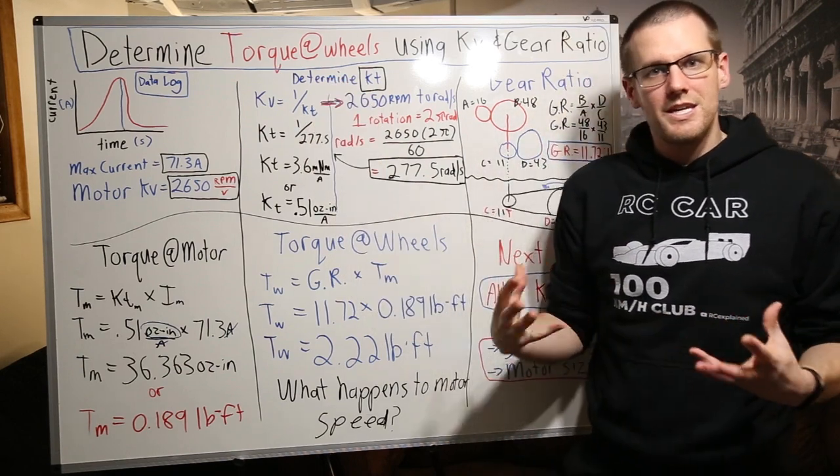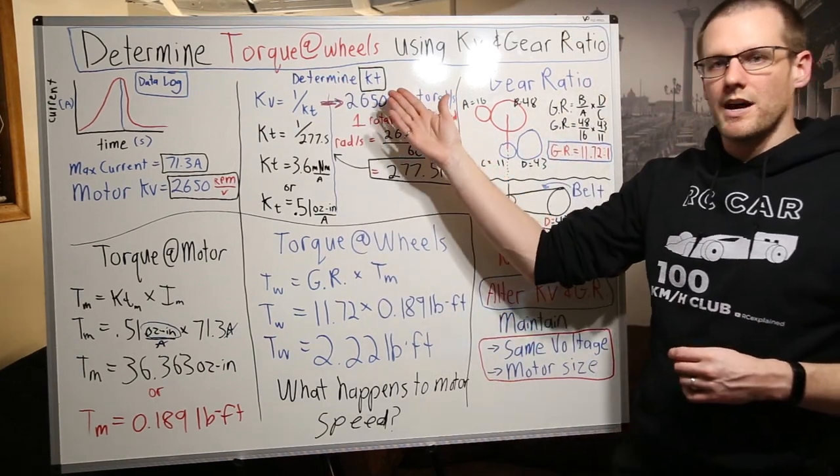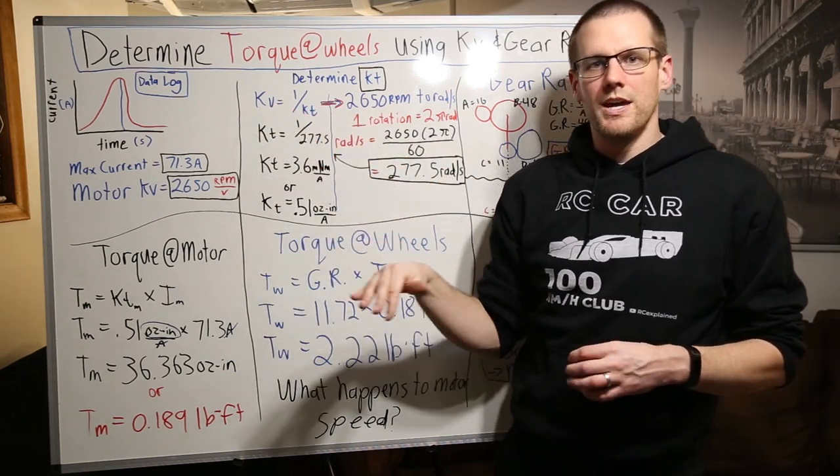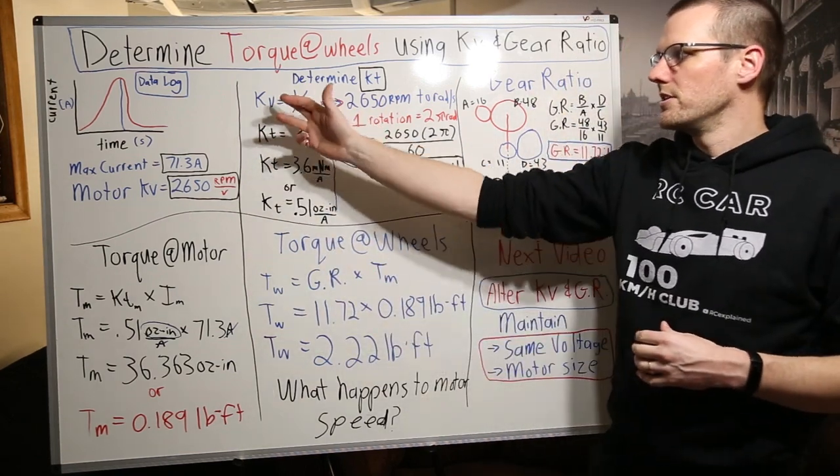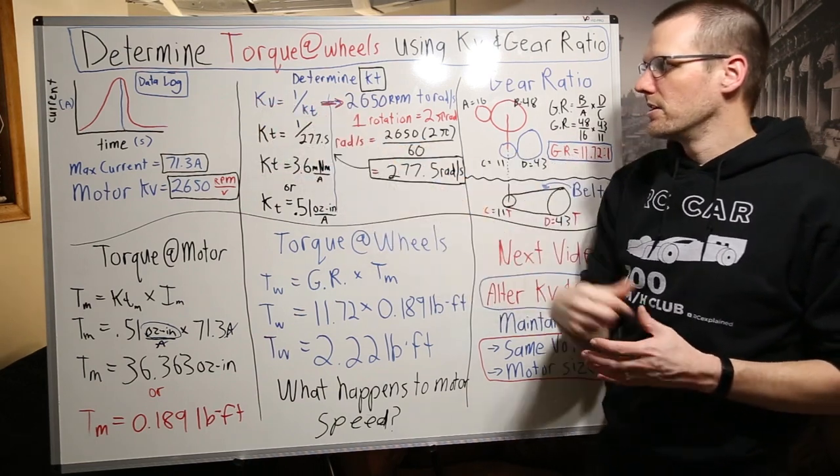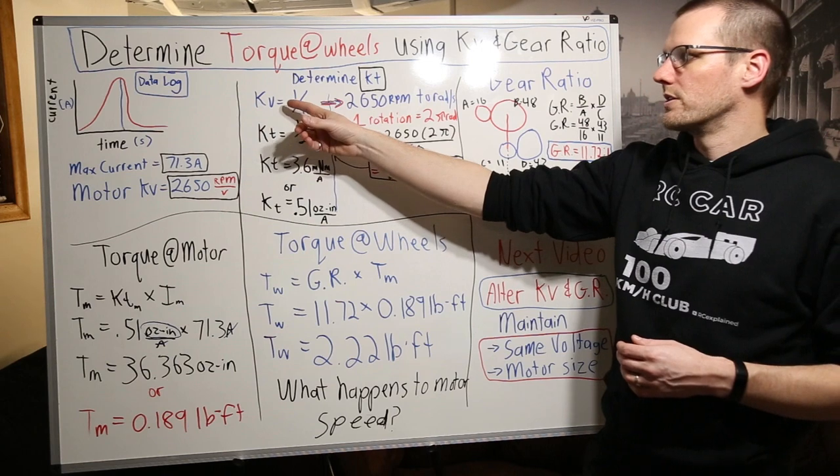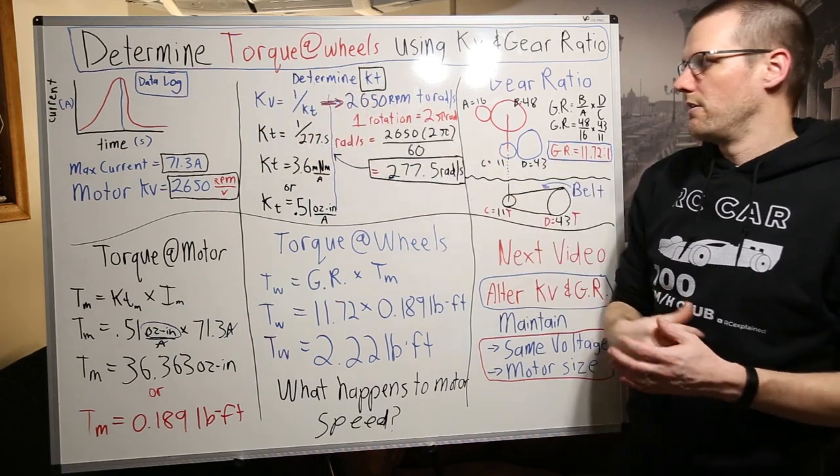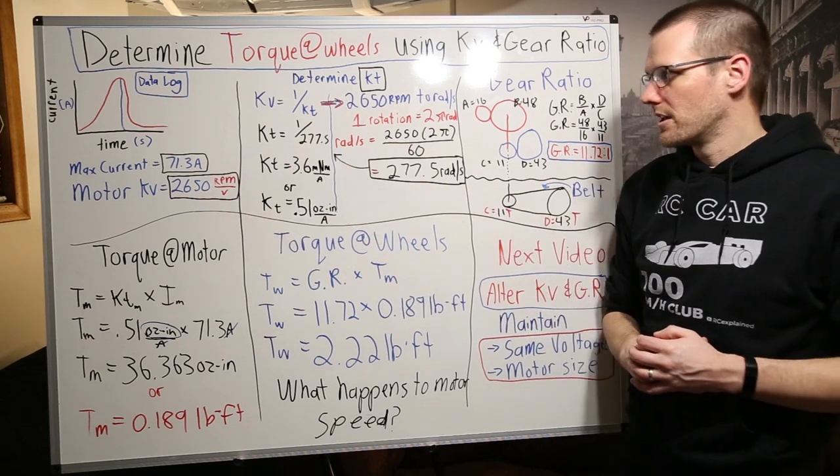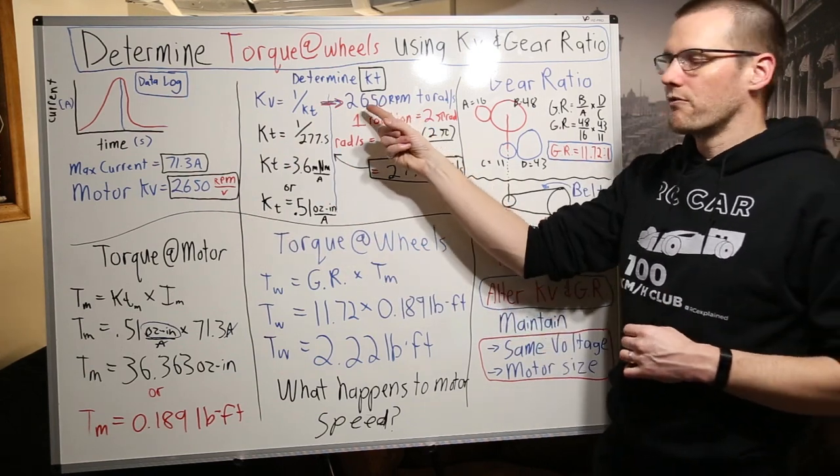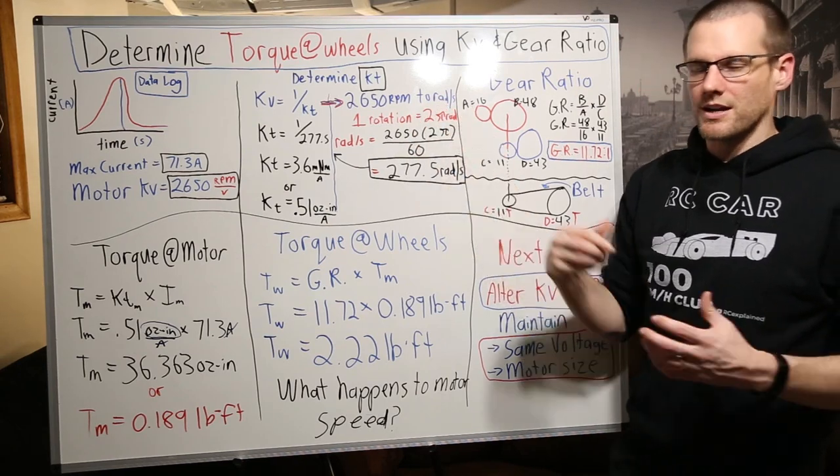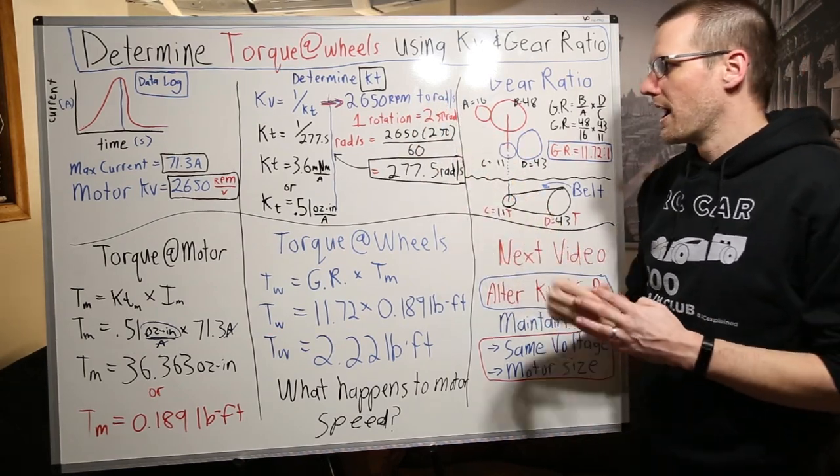Now the way that we calculate our KT value is with this equation where the KV value is equal to 1 over KT. If you simply rearrange this equation and throw KT on the left side and KV on the bottom here, you get KT is equal to 1 over KV. Now, before we go and cover the rest of this, this was actually a question that I wanted to answer is how do we go from 2650 RPM to rads per second?